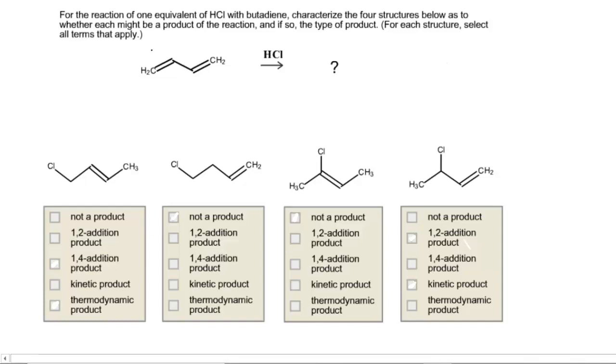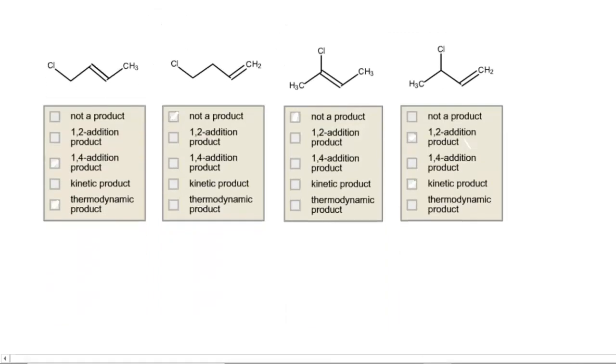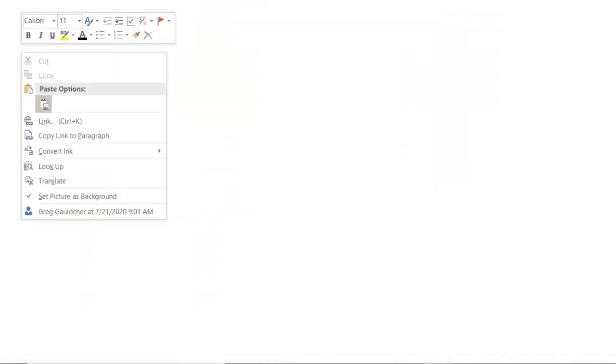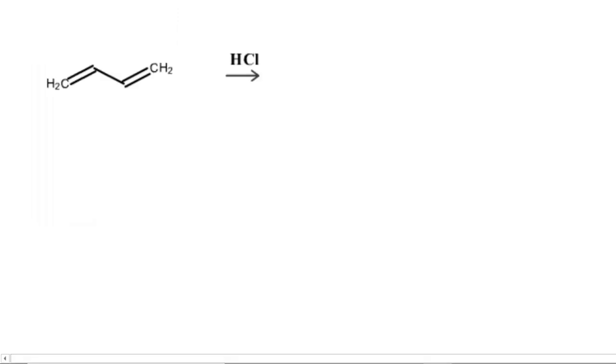In this reaction, we are taking butadiene and reacting it with HCl. And we have to predict which, if any, of the four products are going to be formed in this reaction. So before we start to worry about the different products drawn and the answer boxes, let's just come down here and try to figure out the reaction on our own terms. And then we'll go back and select the correct answer.